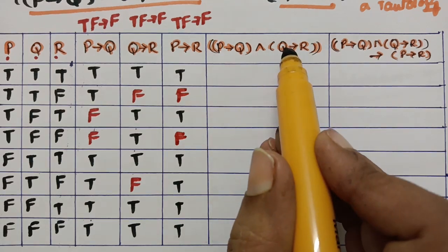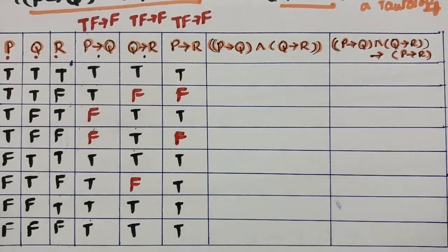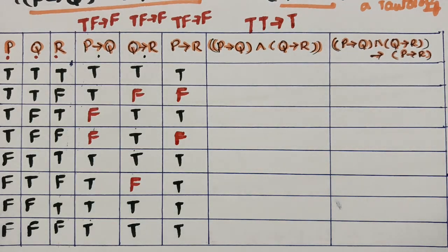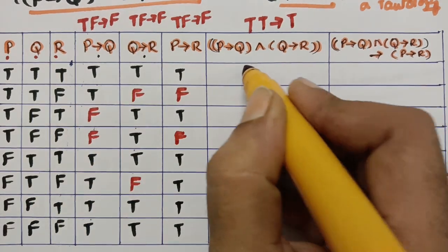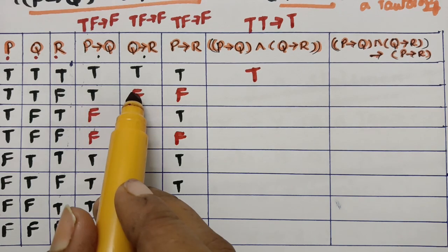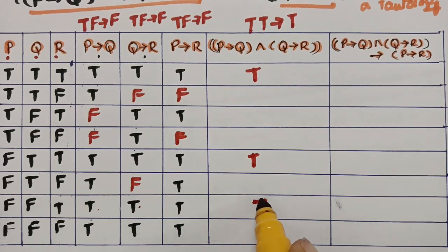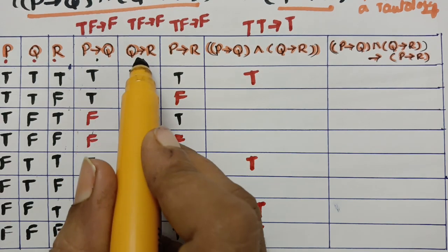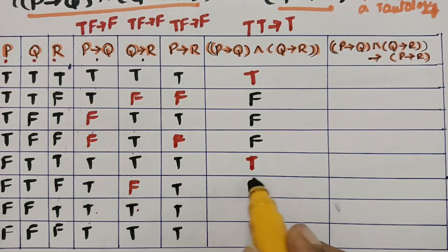There is a conjunction (∧) between p→q and q→r. The logic for conjunction: if there are two trues, immediately write one true. Checking pairs: two trues → true; two trues → true; two trues → true; two trues → true. The remaining rows are all false.